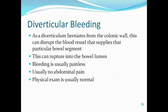Briefly on diverticular bleeding: as your diverticulum herniates from the colonic wall, this can disrupt the blood vessel supply to that particular bowel segment, which can then rupture into the bowel lumen. Bleeding is usually painless, with no abdominal pain, and physical exam is usually normal. This patient should ultimately have a scope, should be investigated, and should be observed until the bleeding settles down. Thank you very much.